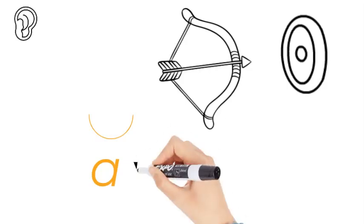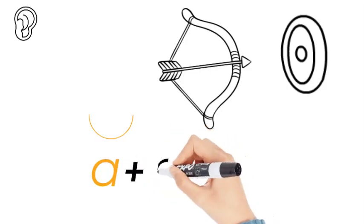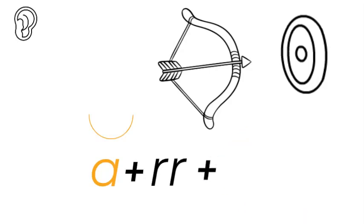A. Now we can hear a rr and it's a double rr. A, rr, o.